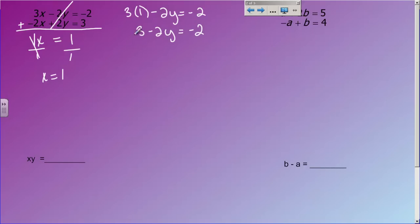That's just 3. And I'm going to solve this for y. I'm going to get rid of this 3 by subtracting 3 on both sides. And I end up with negative 2y equals negative 5. And then when I divide both sides by negative 2, my negatives cancel, and I just end up with y equals 5 over 2.